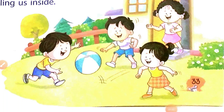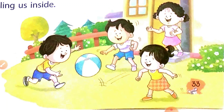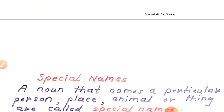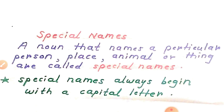Students, in the previous lesson we learned that all names are nouns. A noun is a name of any person, place, animal, or thing. In this lesson we will learn about special names. A noun that names a particular person, place, animal, or thing is called a special name. Special names always begin with a capital letter. For example: Delhi, Rajkot, Meena — these are special names.